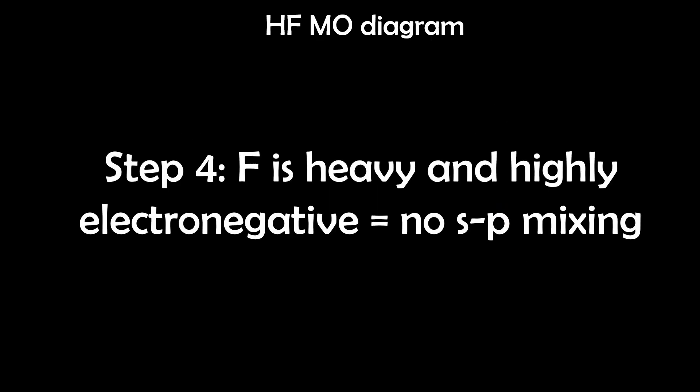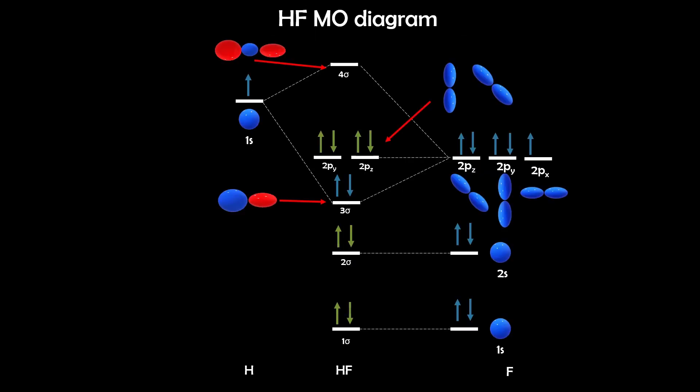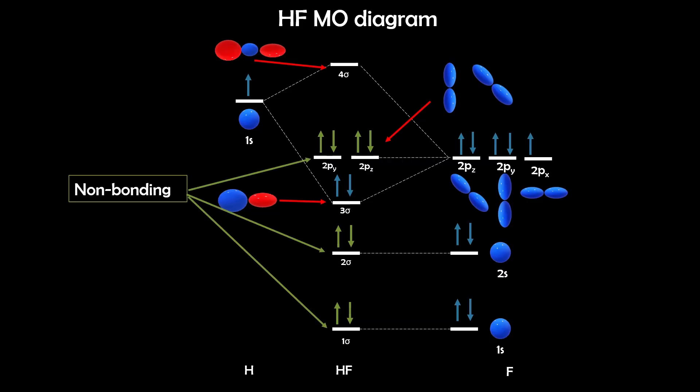Step 4: Is there sp mixing? Since fluorine is a heavier element, the 2s and 2p orbitals are far apart, so there's no significant sp mixing in this molecule. Step 5: Build the molecular orbital diagram. Fluorine's 1s and 2s orbitals are too low in energy to interact with hydrogen's 1s, so they stay as non-bonding core orbitals. Hydrogen's 1s and fluorine's 2px can interact, forming a sigma bonding orbital and an antibonding orbital. The other two fluorine 2p orbitals — 2py and 2pz — are non-bonding because they don't align with hydrogen's orbitals, so they remain as lone pairs.